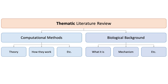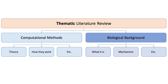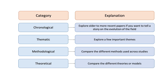How you outline your review will depend on what exactly your aim is — i.e., what story are you trying to tell. For instance, in my masters thesis I wrote a thematic review, because I wanted to explore two things separately: one part dedicated to the computational methods and how they work, and the other part dedicated to the biological background. That being said, there are several ways a literature review can be outlined.